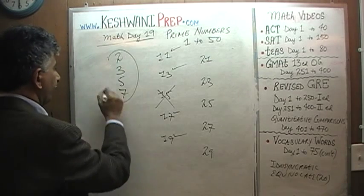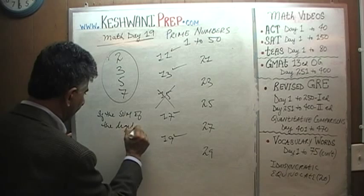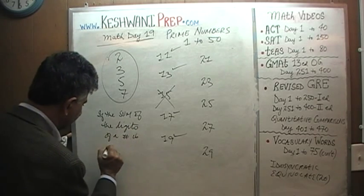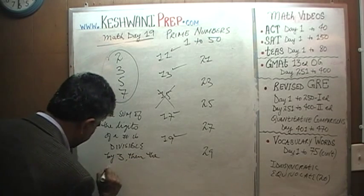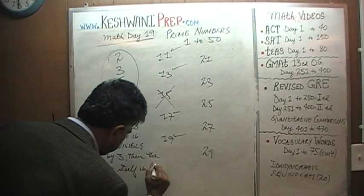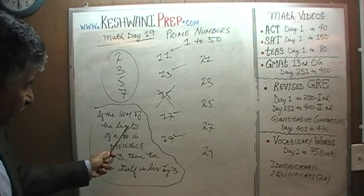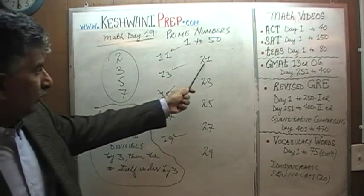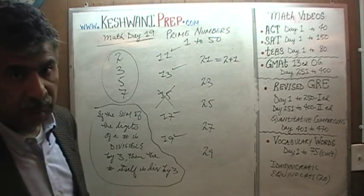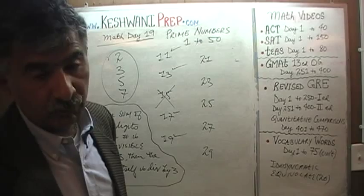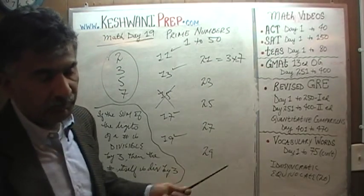Here's the answer: 2, 3, 5, and 7 are our prime numbers so far. If the sum of the digits of a number is divisible by 3, then the number itself is divisible by 3. 21: 2 plus 1 equals 3. The sum of the digits is 3, and 3 is divisible by 3. Therefore, 21 is divisible by 3. Of course, 21 is simply 3 times 7. Because it is divisible by at least one prime number, 21 is not a prime number.